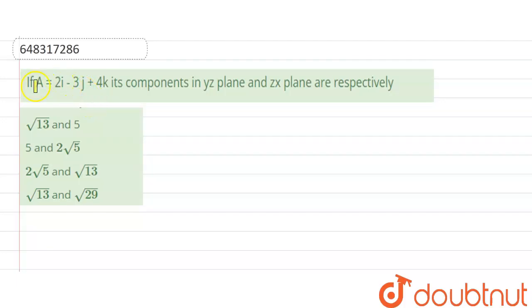Hello friends, our question is: if A is equal to 2i minus 3j plus 4k, its components in y-z plane and z-x plane are respectively. So we have to find out the components of the given vector A in y-z plane and z-x plane respectively. Options are: